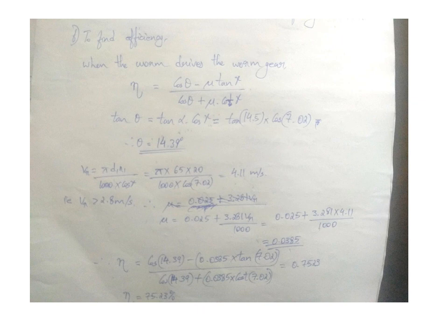We have efficiency equation eta equals cos theta minus mu tan gamma by cos theta plus mu cot gamma tan theta. Theta can be found from tan alpha times cot gamma, so theta will be 14.38 degree. And for finding the mu value, 0.025 plus 3.281 times Vr by 1000. We have the velocity Vr by finding like pi d1 n1 by 1000 times cos gamma. So from that and substituting this mu, Vr, and theta value, we get efficiency as 0.7523 or 75.23 percent.